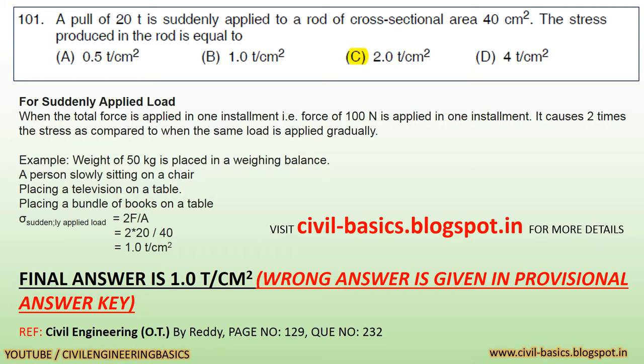Let's see the details. For a suddenly applied load, when the total force is applied in one installment, it causes two times the stress as compared to when the same load is applied gradually. Examples include a weight of 50 kilograms placed on a weighing balance, a person slowly sitting on a chair, or placing a bundle of books on a table. So, stress for suddenly applied load = 2F/A = 2 × 20 / 40 = 1.0 tonne per centimetre square.